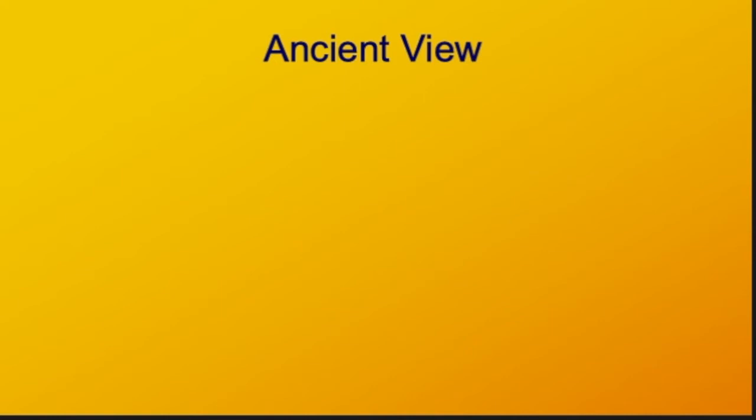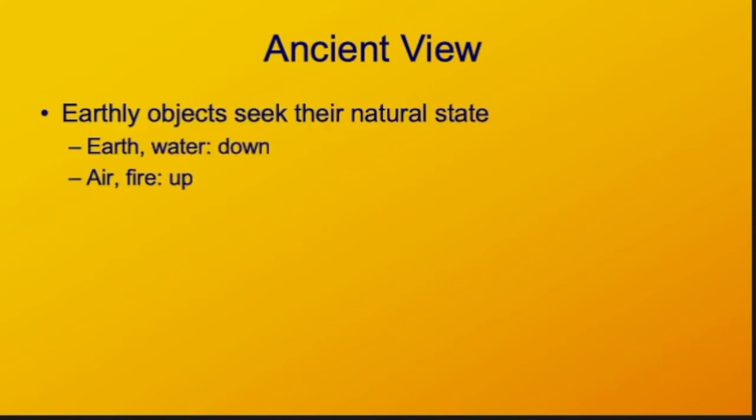I'd like to describe the ancient view of motion. The ancients believed that there were four elements - earth, air, fire, and water. All objects that were on earth made of these four elements would seek their natural state. The natural state of earth and water is down, toward the center of the earth.